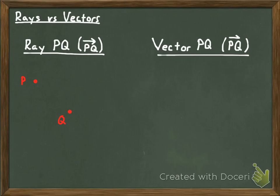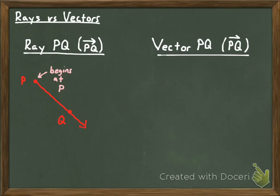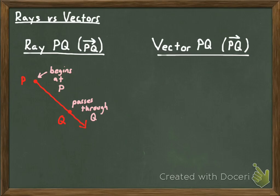In order to draw either one, we need a point P and a point Q. To draw ray PQ, you need a ray that begins at point P and goes through point Q — so it starts here and continues through point Q like that. Ray PQ begins at point P and goes through point Q. Another thing that is true about a ray, because it just passes through a point, is that it has an undetermined length — in other words, rays are infinitely long.